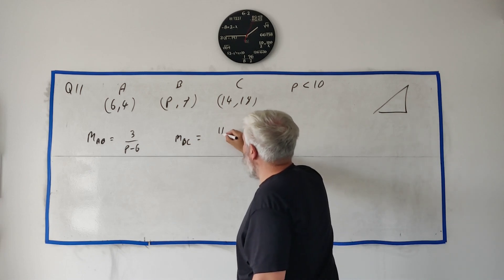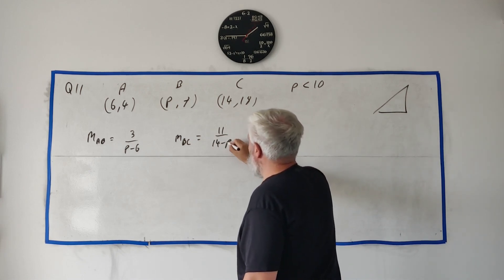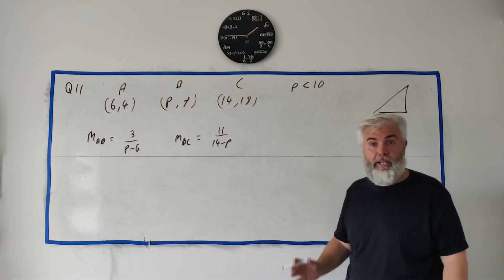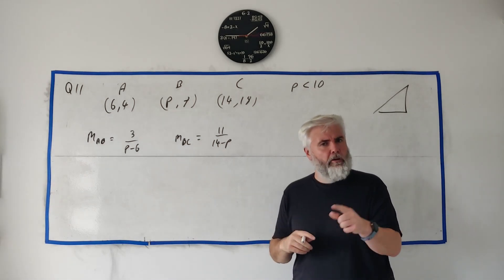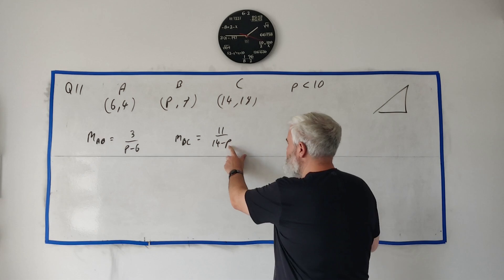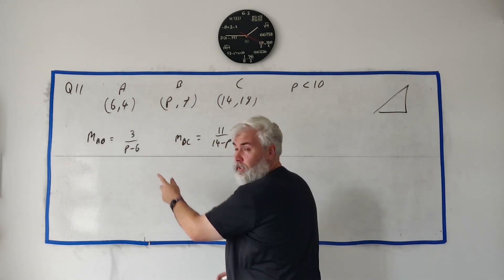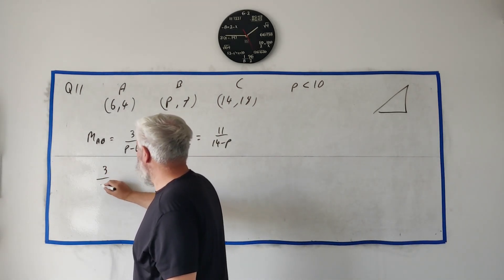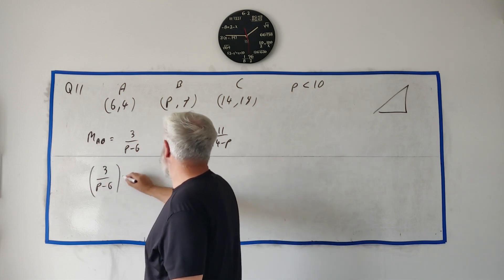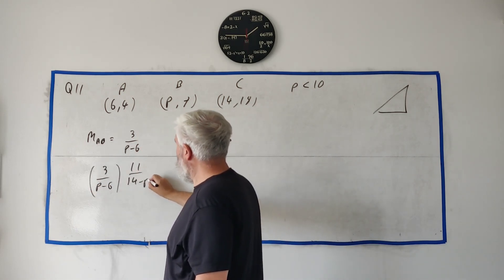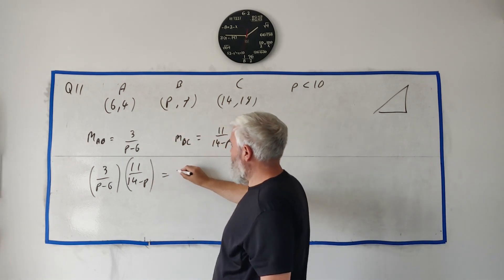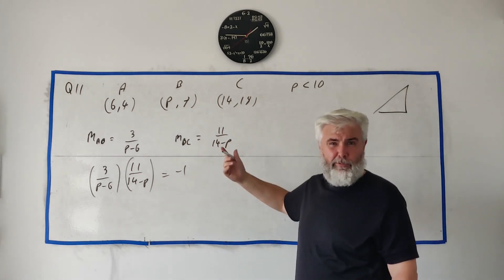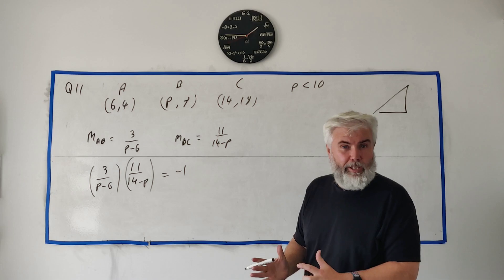The slope of BC is very similar: 18 minus 7 is 11, over 14 minus p. Now we know these lines are perpendicular, so we flip one slope upside down and change the sign. The more formal way to say it is that the two slopes multiplied by each other equal minus 1. Either approach is equivalent — flip one, change the sign, set them equal.